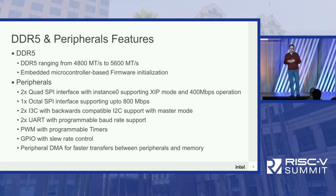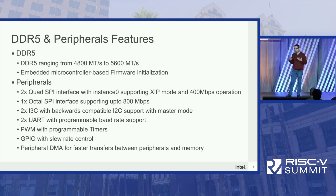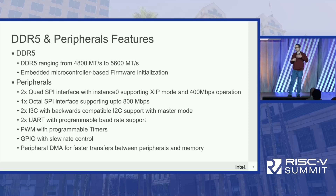On the DDR5 side, it's the latest generation technology — in fact, it's very hard to even find DDR5 DRAM modules, but we already have it enabled on silicon, and it can go up to 5600 MTS. Just like PCIe, it has its own embedded microcontroller to manage the training sequence. Beyond that, we have two quad SPIs, one octal SPI, two I3Cs, a UART for debug actively used in OpenOCD, PWMs, and GPIOs with slew rate control. Peripheral transfers between peripherals use peripheral DMA, which takes the workload off the main CPU. That is a summary of what we are enabling as the Horse Creek SoC.